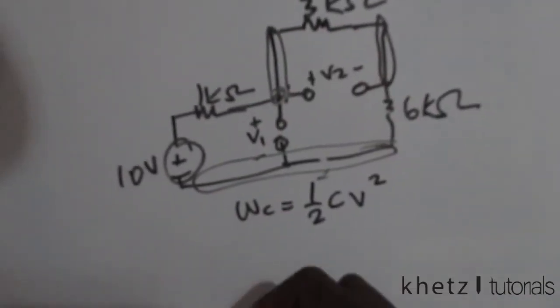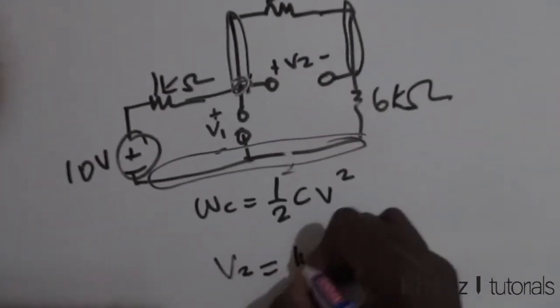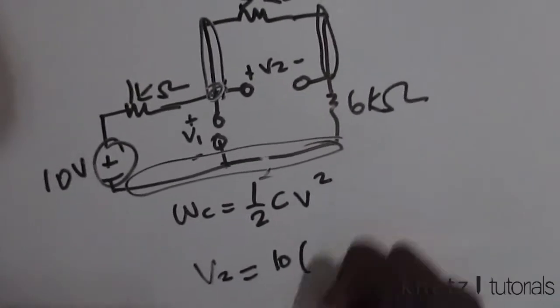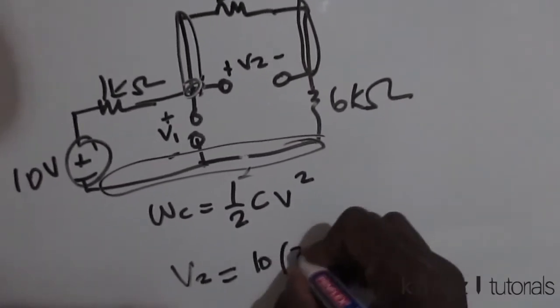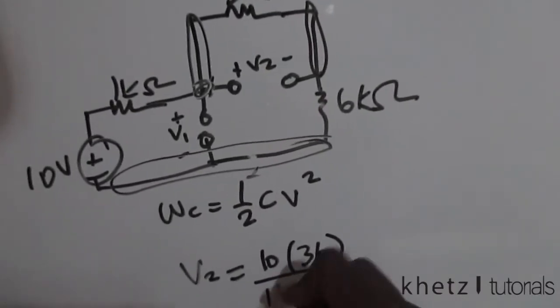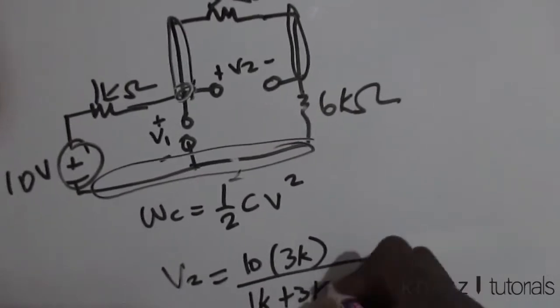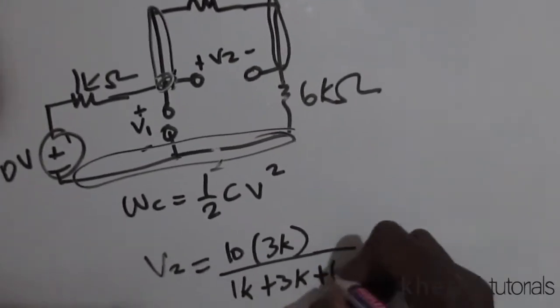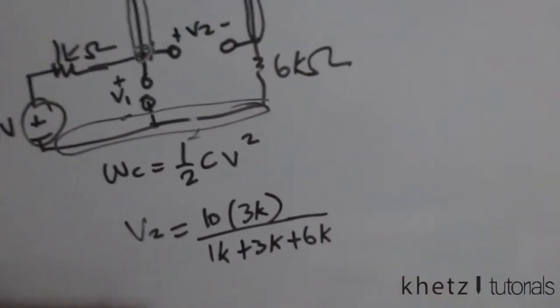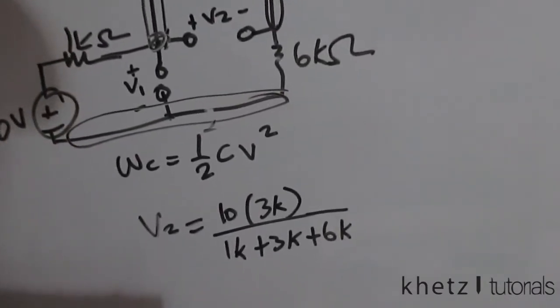v2 equals 10, which is the voltage source value, multiplied by 3k divided by 1k plus 3k plus 6k. Punching this into a calculator—let's see if we can simplify without a calculator.